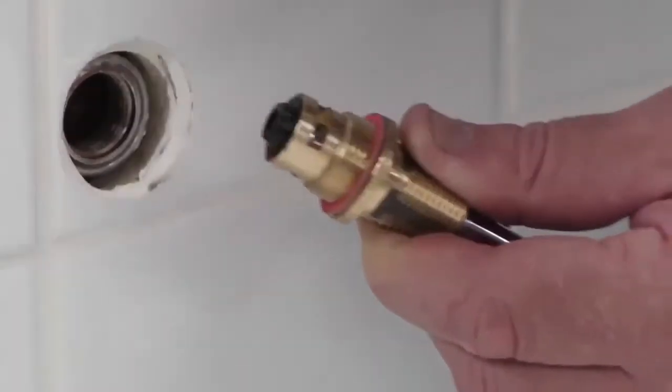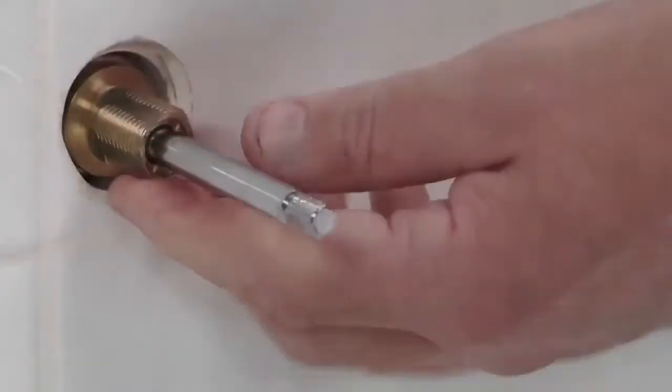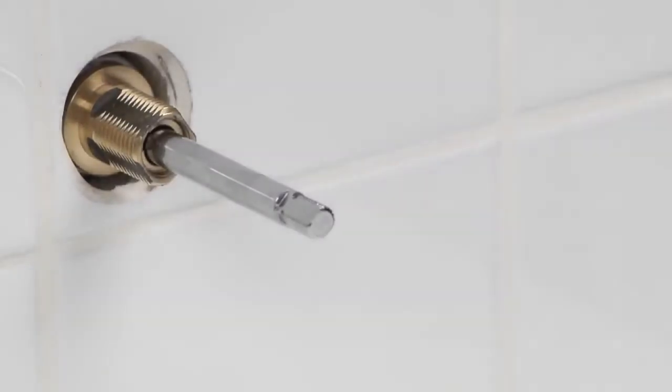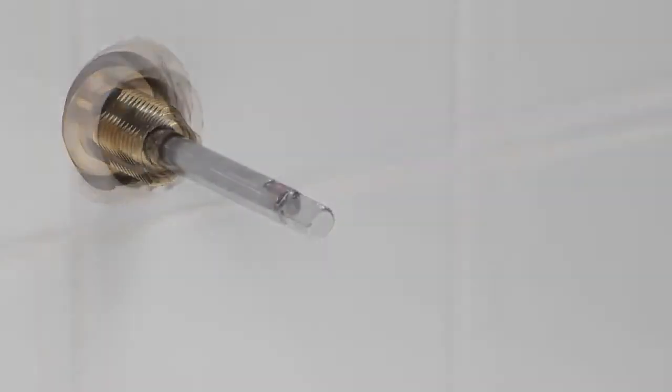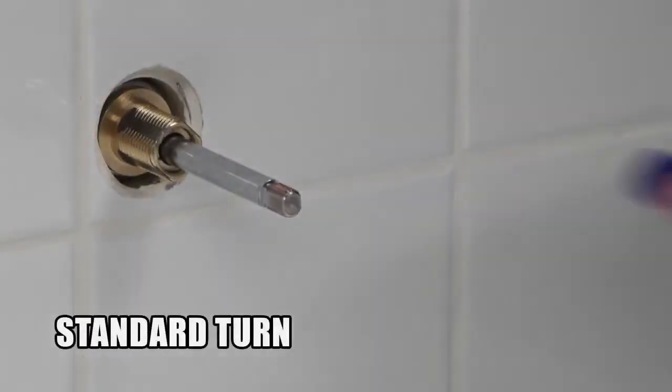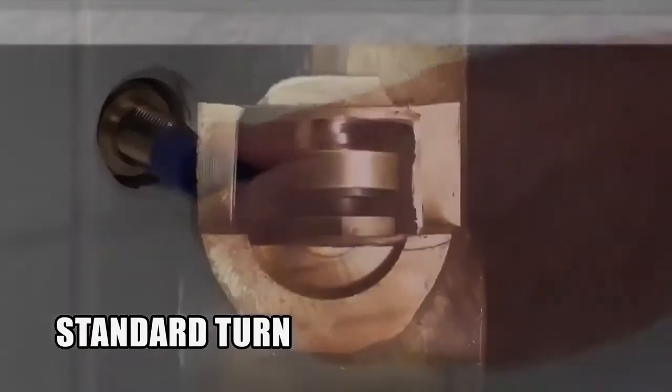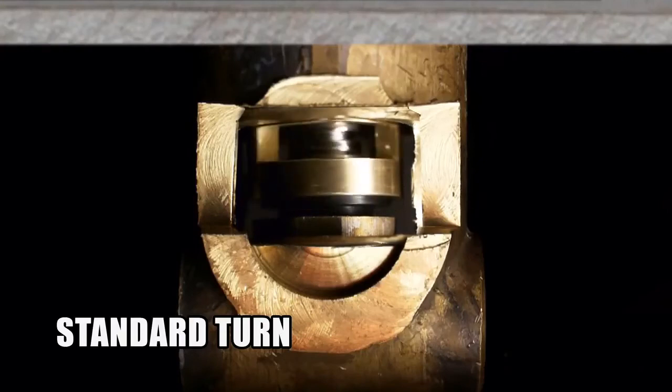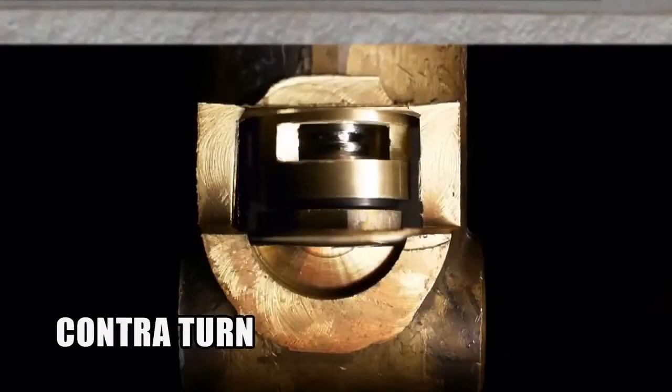Screw the entire Maxxis tap assembly into the tap body. Fully tighten the Maxxis assembly by using a spanner on the flat sides of the locking nut, being careful not to damage the external threads. Place the Maxxis spanner on the end of the spindle of the Maxxis SBA and wind the internal assembly so it engages fully with the seat of the tap body. Wind in a clockwise direction for a standard turn SBA and in an anti-clockwise direction for a contra-rotating SBA.